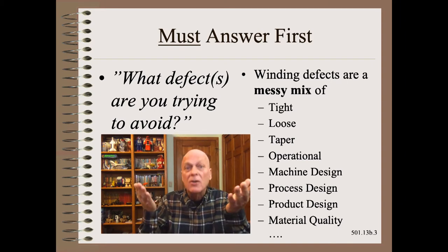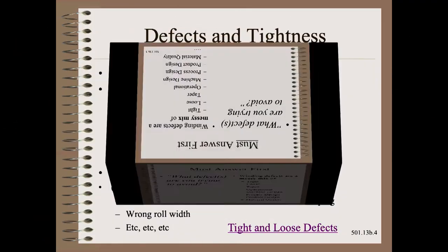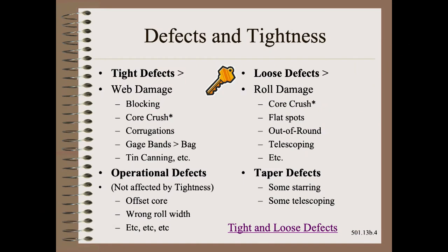So how do we even get started? We get started by noting that most winding defects you will ever run into can be classified into tight, loose, taper, or operational. Common examples are listed here. The careful reader will note that core crush shows up in three categories: tight, loose, and product design.